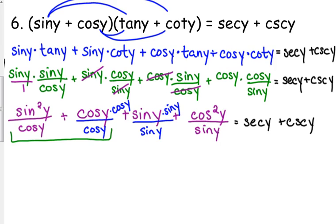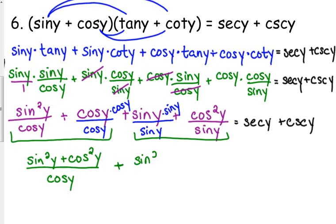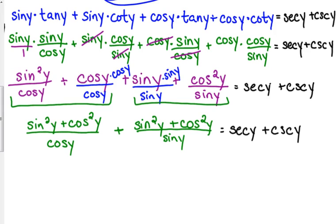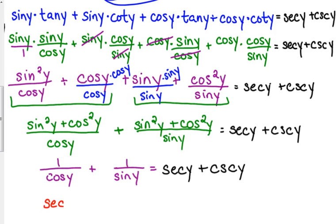So these both have a denominator of cosine of y, so I can add their numerators. And the second numerator is now cosine squared. These two both have a denominator of sine, and the first numerator is now sine squared. And we are two steps away. Because those numerators, sine squared plus cosine squared, one. So we have one over the cosine of y, we have one over the sine of y. And those can be rewritten using their reciprocal functions, secant plus cosecant. Which is what we were trying to get to.